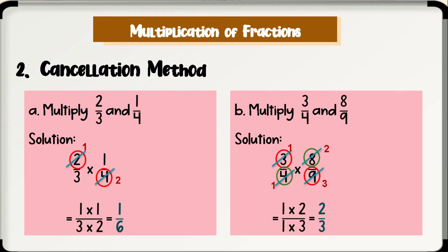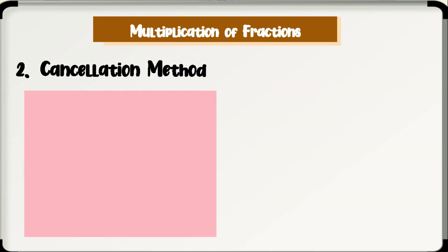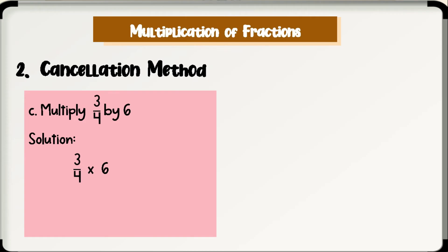Note that if the cancellation method is not applicable to the given fractions, we go back to the usual method of multiplying numerator by numerator and denominator by denominator. Letter C: multiply 3 fourths by 6. Cancellation method is applicable since 4 and 6 have a common factor of 2. So 4 divided by 2 is 2 and 6 divided by 2 is 3. Rewrite using the uncancelled factors: 3 times 3 over 2. Multiplying gives 9 over 2, or 4 and 1 half. Therefore, 3 fourths times 6 is equal to 9 over 2, or 4 and 1 half.